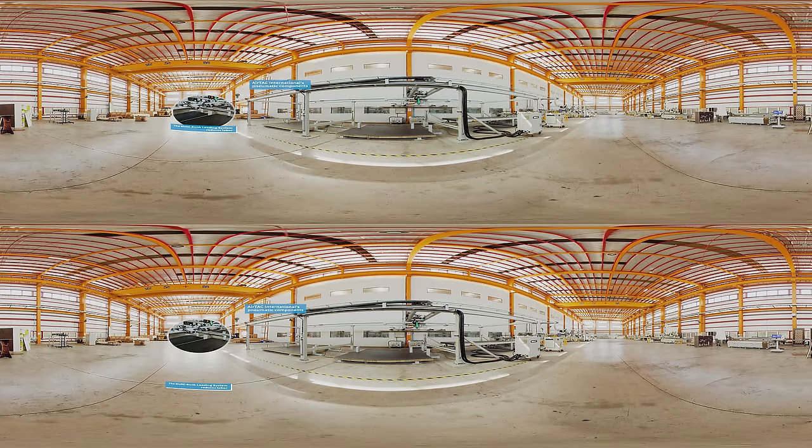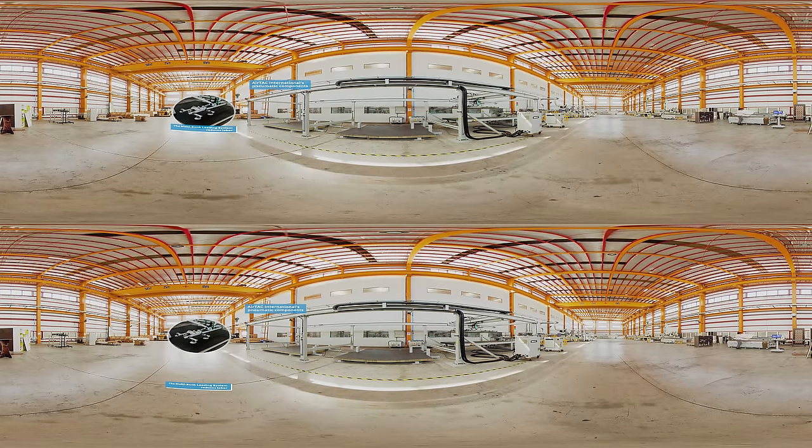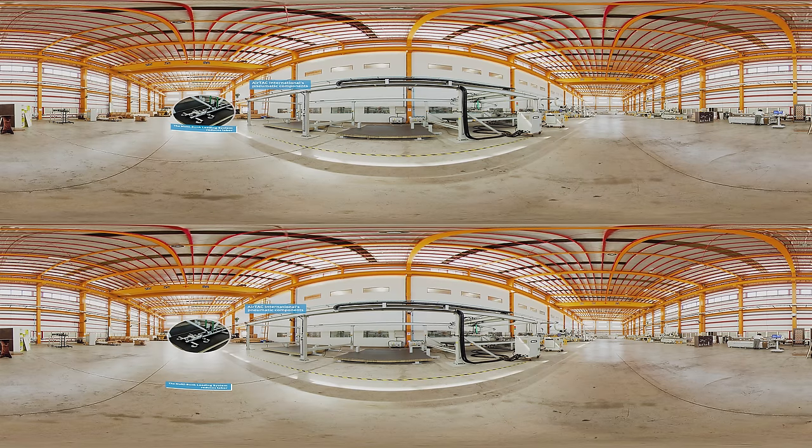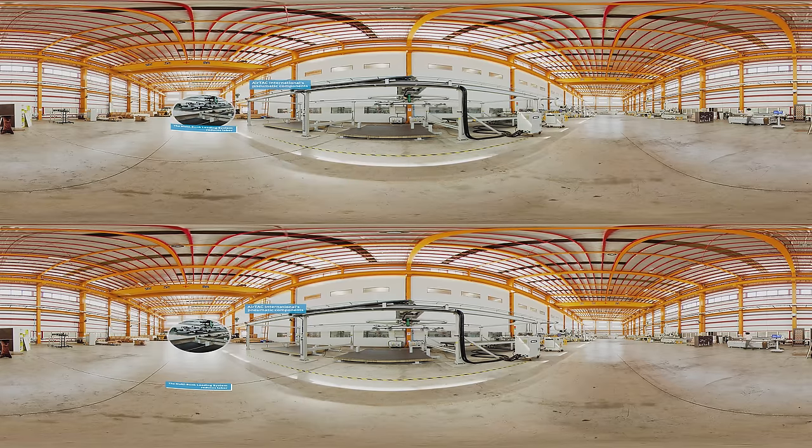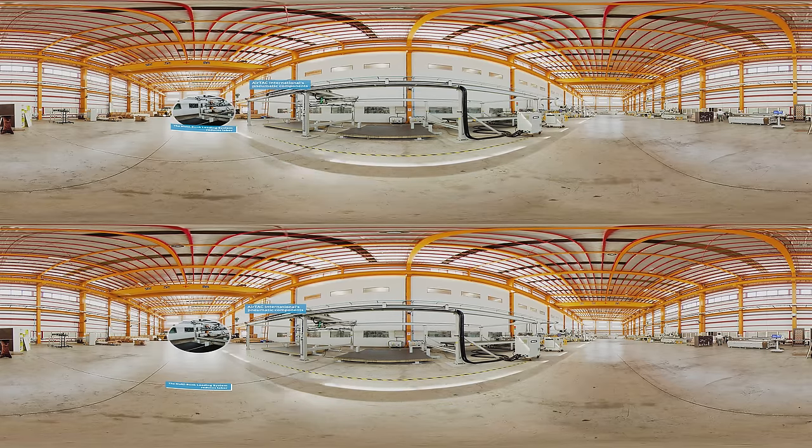In response to the current mainstream preference for customization over bulk production, Anderson Group has developed the Smart Panel Furniture Processing System, leading to a transition from bulk automated production to a customizable, smart, and flexible production line.